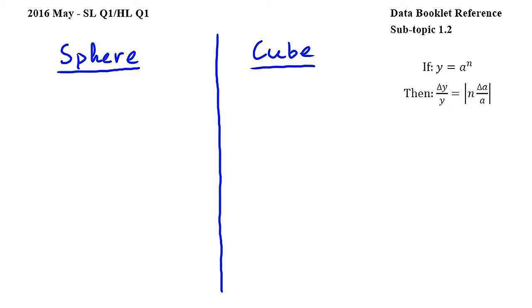In this question we have a sphere inside a cube and we have to find the ratio of the percentage uncertainty in the volume of the sphere and the percentage uncertainty in the volume of the cube.